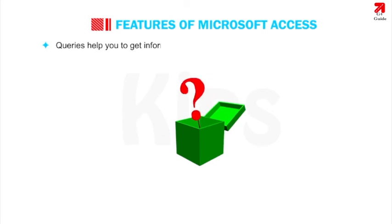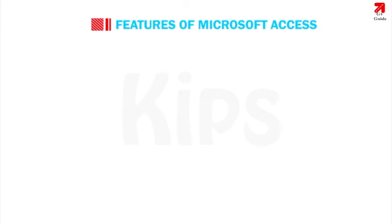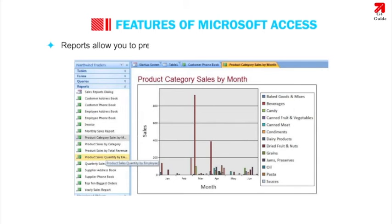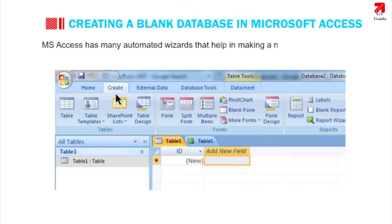Queries help you to get information on a specific topic from the information stored in the database. Reports allow you to present data in a meaningful and summarized manner. MS Access has many automated wizards that help in making a new database, tables, forms, reports, etc.